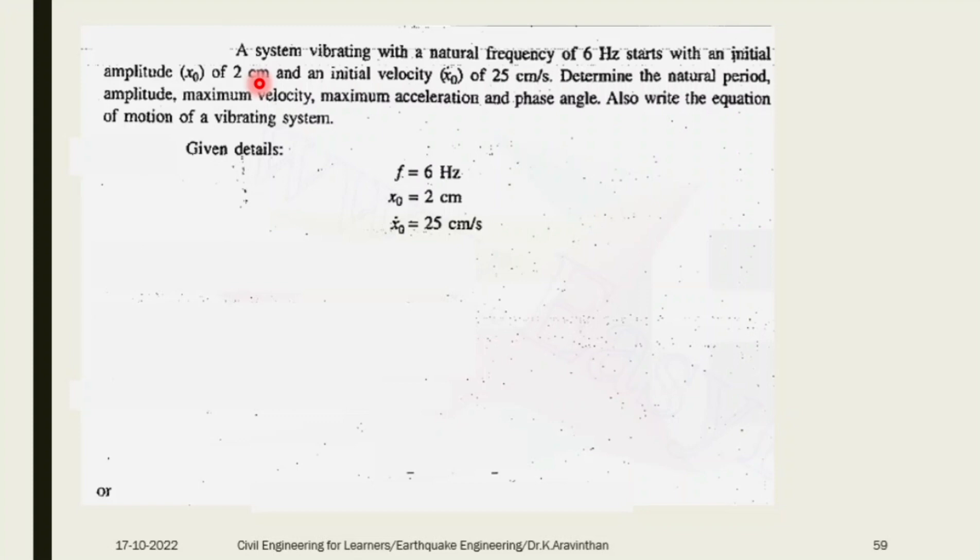With an initial amplitude of 2 centimeters and initial velocity 25 centimeters per second, determine the natural period T, maximum velocity v_max, maximum acceleration x_max, and phase angle φ. Also write the equation of motion of the vibrating system. Three parameters you know: f, x dot, and x.